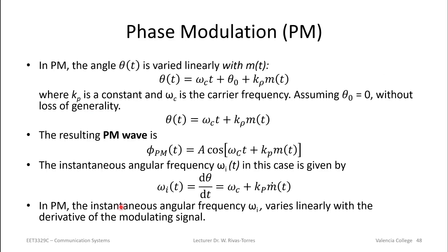For phase modulation, the generalized phase is ω_c·t plus an initial constant phase plus the parameter k_p times our information signal m(t). k_p is a constant, and ω_c is the carrier frequency. For the rest of the discussion, we'll assume the initial constant phase is zero with no loss of generality, so the generalized phase becomes ω_c·t plus k_p·m(t).